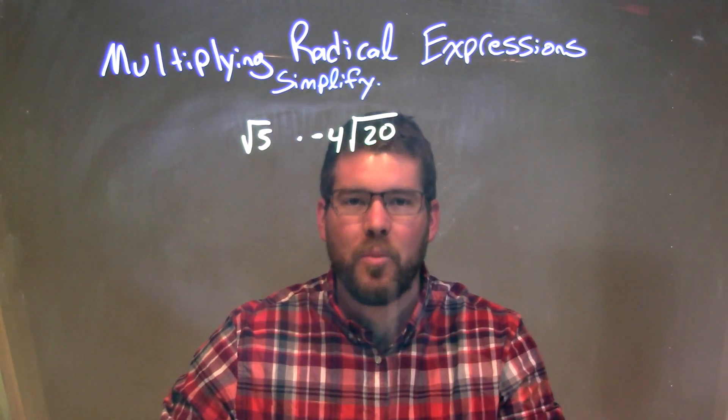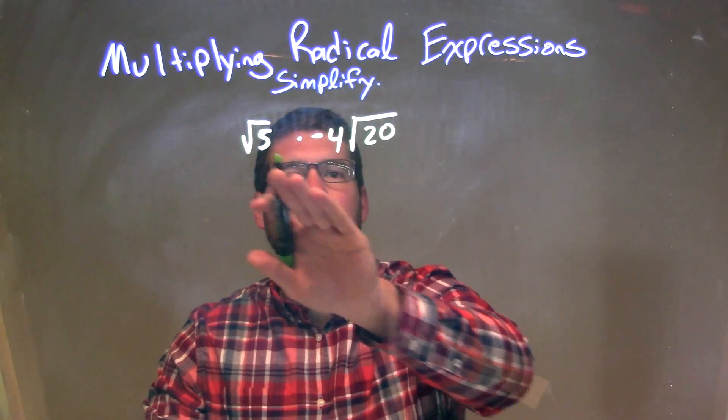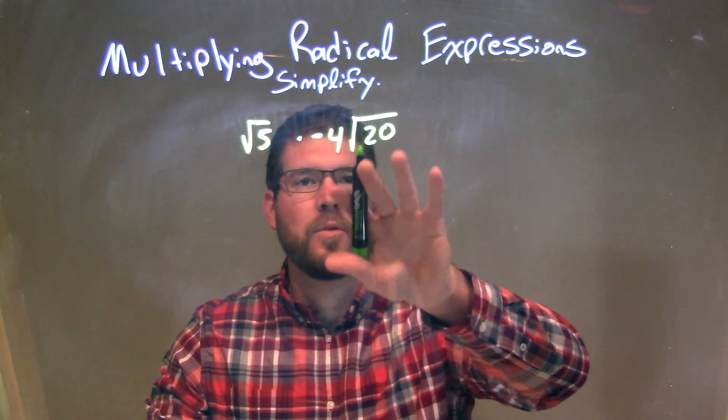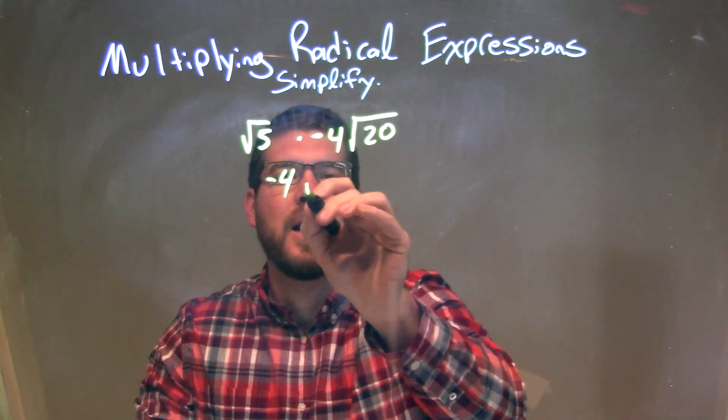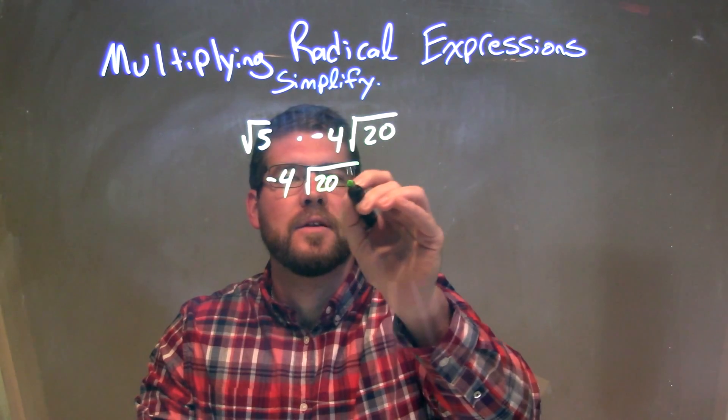Well, since this is all multiplication, let's bring it together. The square roots we can put inside, just have one big square root, the negative 4 out front. So we have negative 4 times the square root of 20 times 5.